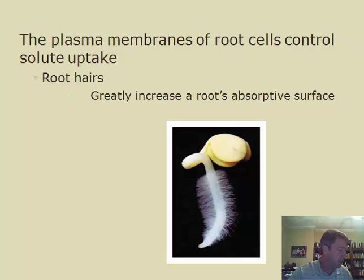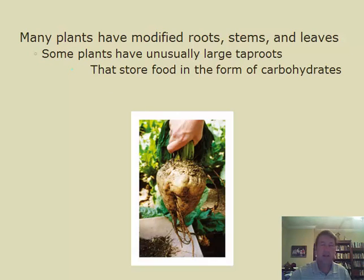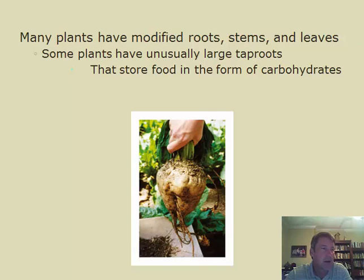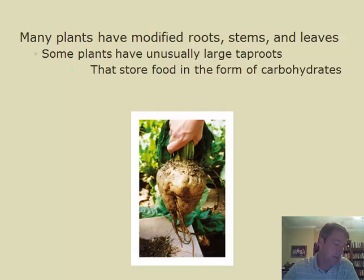There are also storage roots, which are roots modified to store carbohydrates and starches for the plant to use later. Examples include beets and carrots — a carrot is actually a modified taproot of that plant that stores carbohydrates right in the root itself.